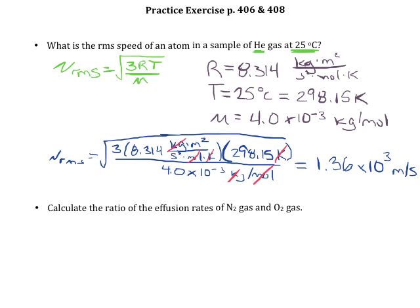So let's look at the second problem here. Let's calculate the ratio of effusion rates of N2 gas and O2 gas. We've got another equation that we can use to calculate this. It makes sense the way that these rates are related because we know that the more massive a gas is, the slower it's going to move.